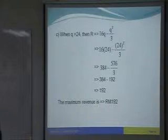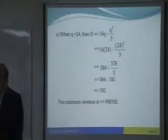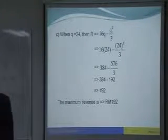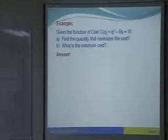So, kesimpulat, then conclusion, the maximum revenue is 192. You must put the conclusion there always. Clear or not? Any questions so far? Okay. Let's look at another example.